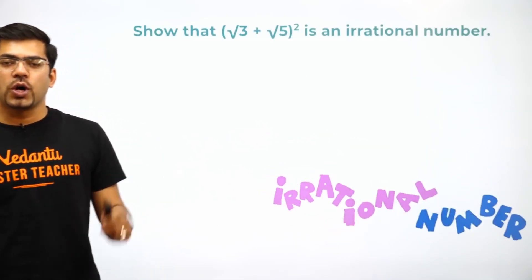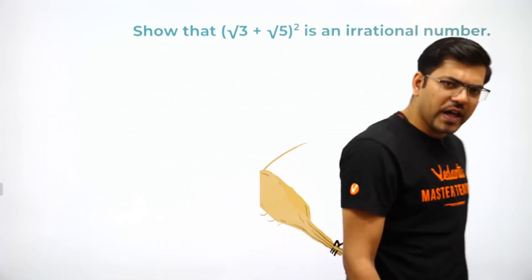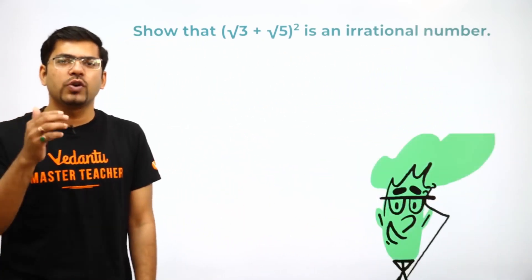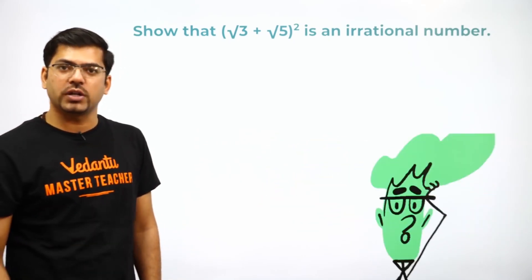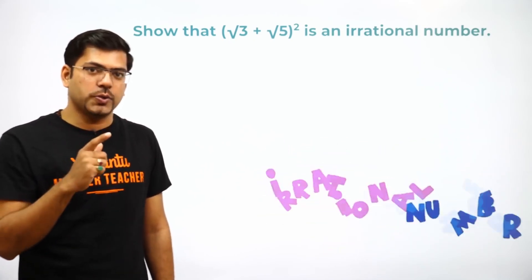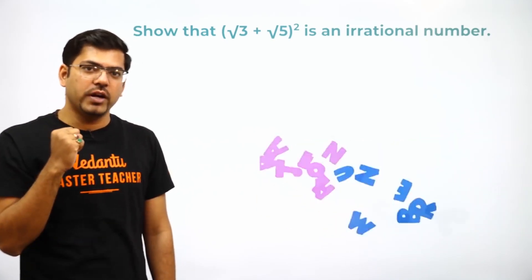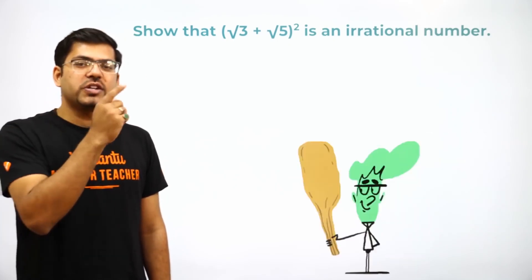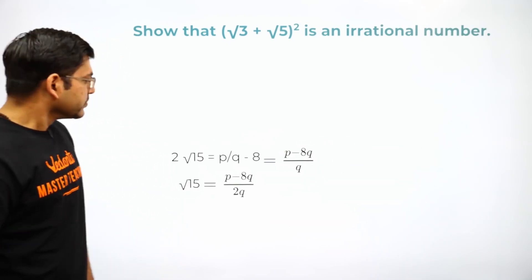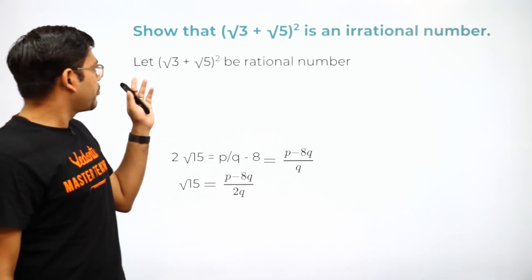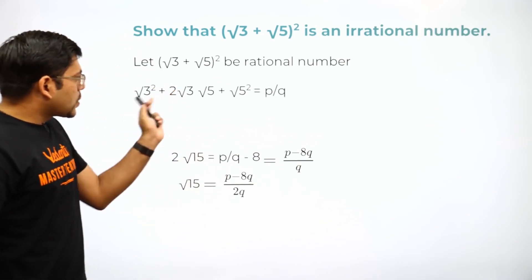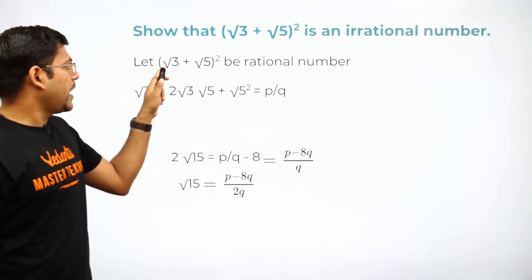Moving on to the next question: show that √3 + √5 is an irrational number. You would have seen this question multiple times. Proving √5 is irrational is easier, but the board may ask a different variation. We need to prove that (√3 + √5)² is irrational. The first step: let √3 + √5 be a rational number.